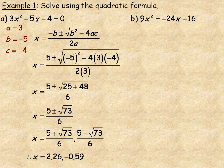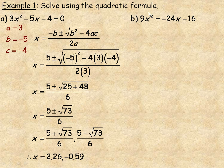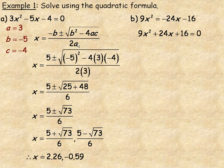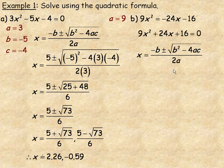In Example B, the quadratic equation is not already set equal to 0, so you should do that first. Rearranging by adding 24x and 16 to both sides gives 9x squared plus 24x plus 16 equals 0. Then identify a, b, and c and write down your formula: a equals 9, b equals 24, and c equals 16.